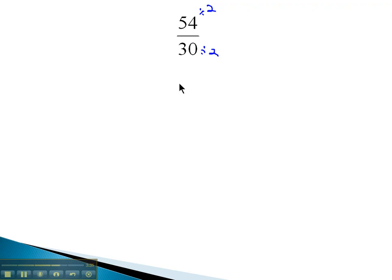54 divided by 2 when we divide out 2 will leave us 27 over 30 when we divide out a 2 gives us 15. And then we can look at these numbers and decide, is there something I can divide both of them by? Is there a factor I can divide out of both the numerator and denominator?